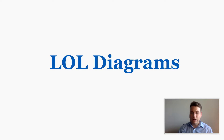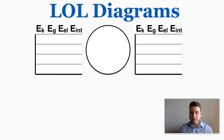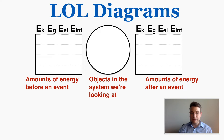This lecture is about LOL diagrams, which are a very specific way that physicists represent how energy is changing in a system. LOL diagrams all look like this, which is why they're called LOL diagrams — you can see it looks kind of like LOL. Basically there are two graphs of energy with a circle in the middle: the graph on the left shows the amount of energy before an event, the graph on the right shows the amounts of energy after, and the circle in the middle is where you draw the objects in the system.